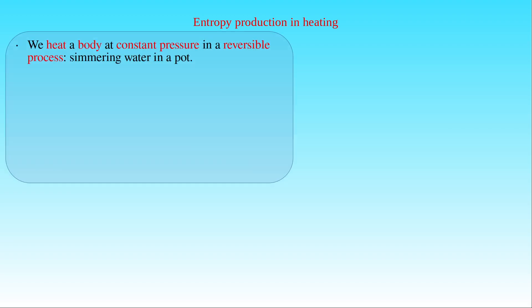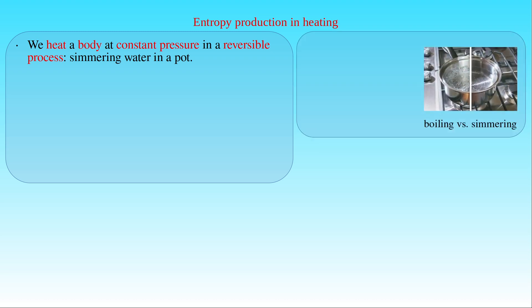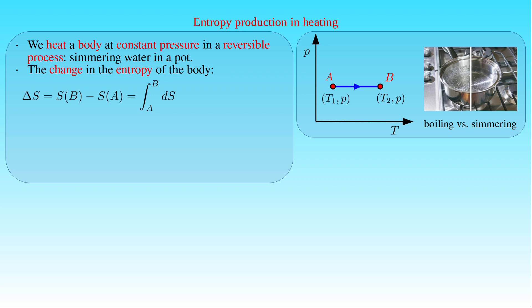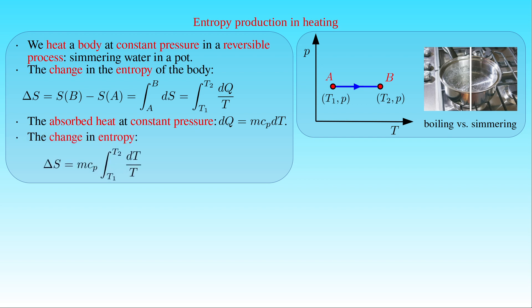Another example will help us study entropy production in the case of heating bodies or liquids. We heat a body at constant pressure in a reversible process, approximated by simmering water in a pot. This process is illustrated in the pressure-temperature diagram, where the body is brought from initial state A at temperature T1 to final state B at temperature T2 at constant pressure. The change in entropy S is written as the integral of reduced heat from T1 to T2, where dQ equals M times C_P times dT. Performing the integration gives M times C_P times the natural logarithm of T2 over T1, provided C_P is approximately constant in that range.